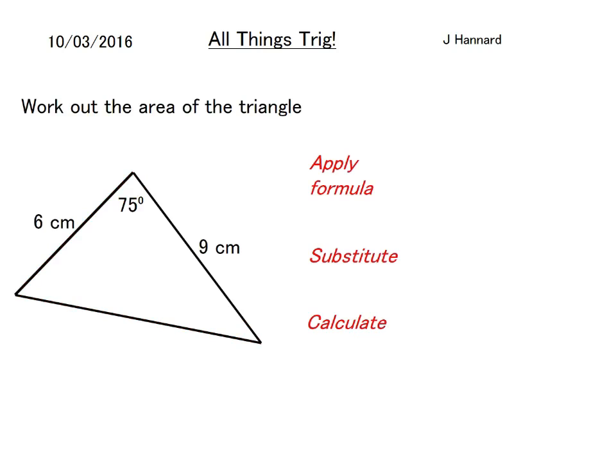Work out the area of this triangle: 6cm, 75 degrees, and 9cm. Half ab sine C. Substitute your numbers in. Area equals half times 6 times 9 times sine 75. Calculate your answer: area equals 26.1 cm squared. Nice and easy.